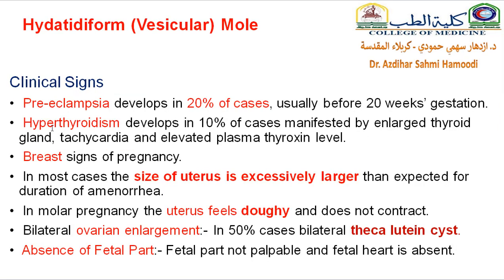The clinical signs include: preeclampsia developing in 20% of cases, and this will occur very early — before 20 weeks of gestation; hyperthyroidism with all its symptoms in 10% of cases, because of the biological similarity between beta-hCG and TSH; breast symptoms; and the size of the uterus will be extremely larger than expected. For example, the patient often comes in the first trimester, but the fundal height corresponds to the second trimester. The uterus feels doughy, there will be no fetal heart and no fetal parts.